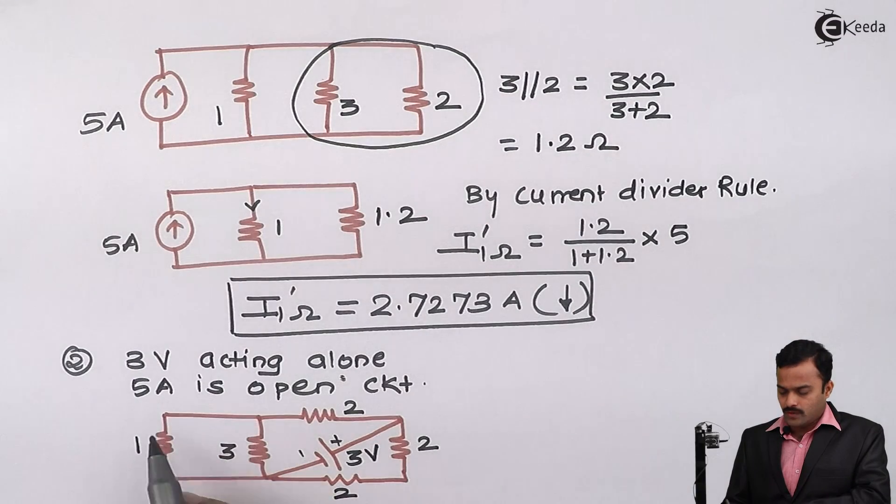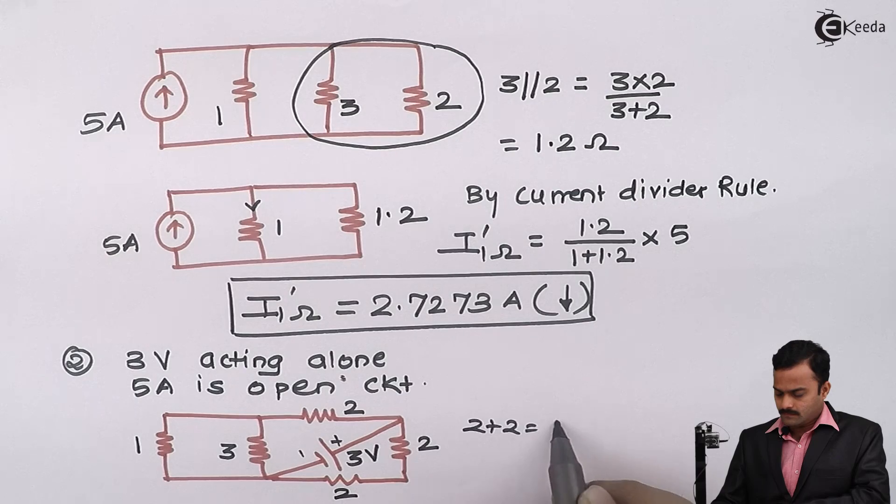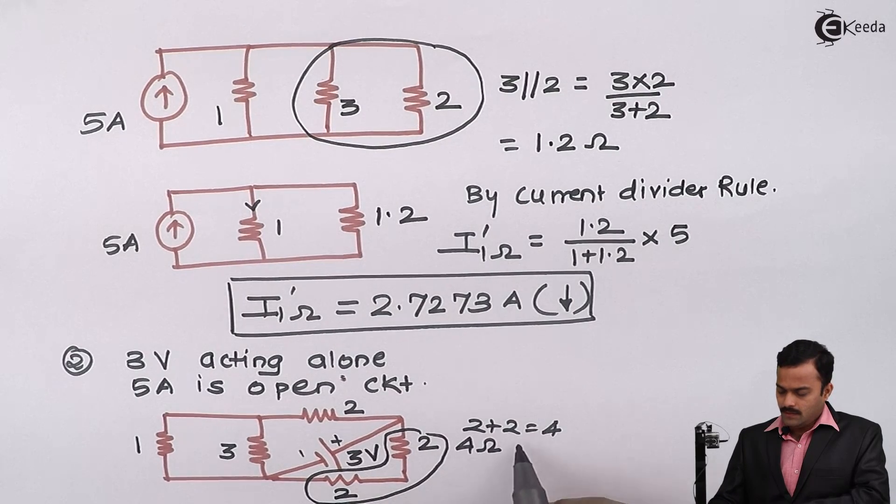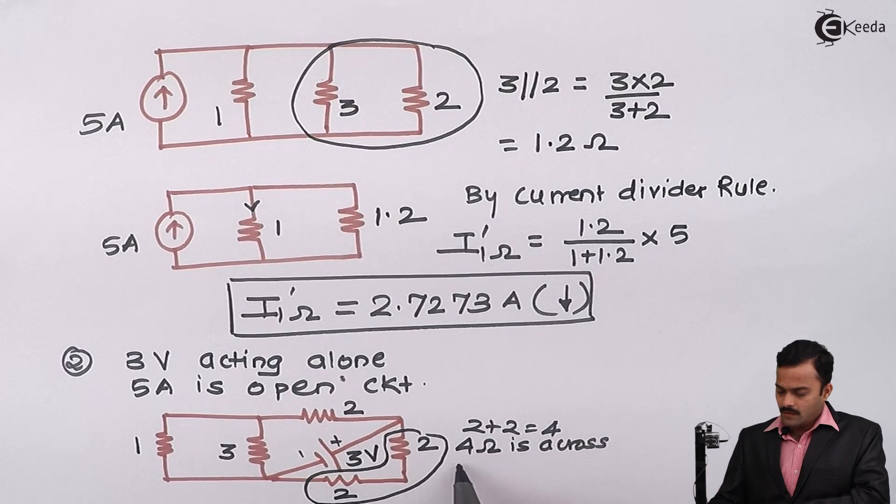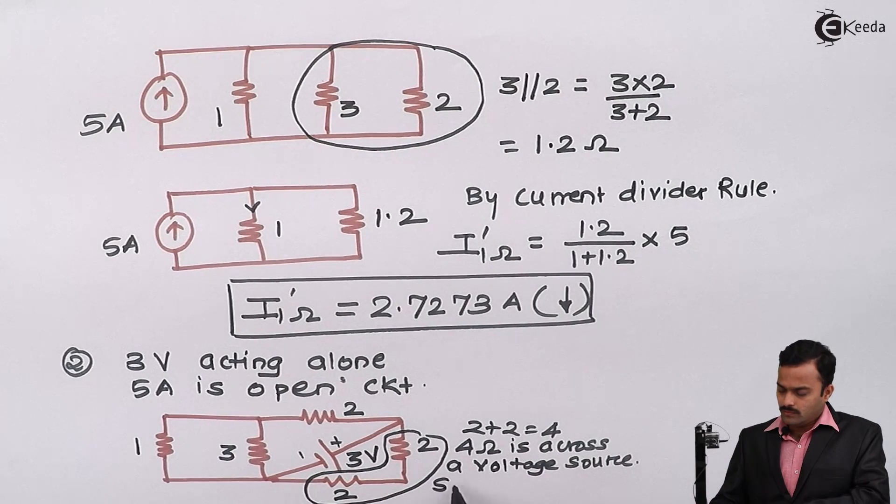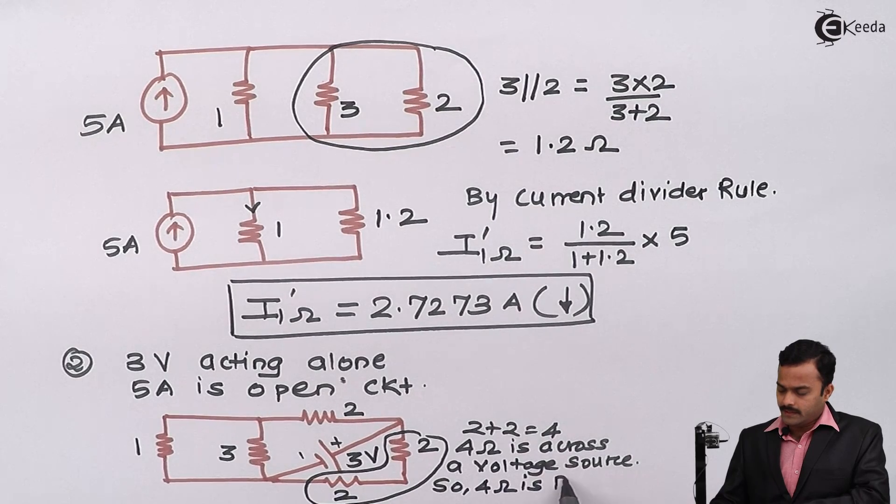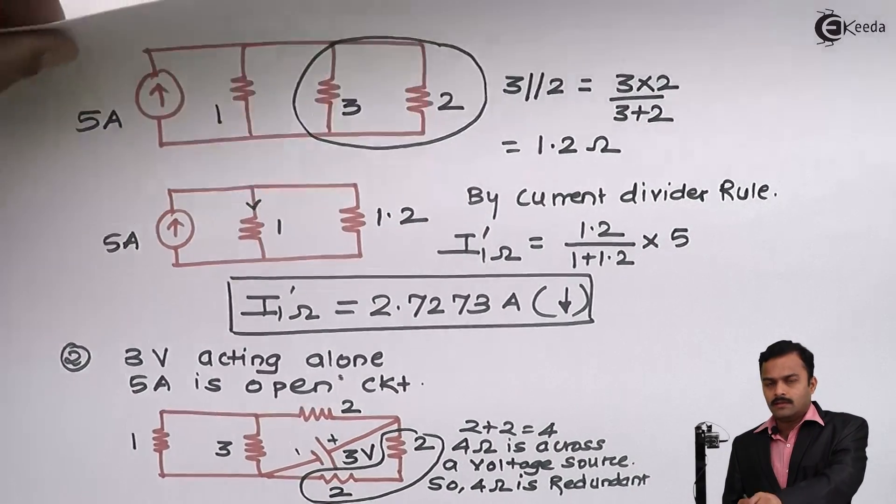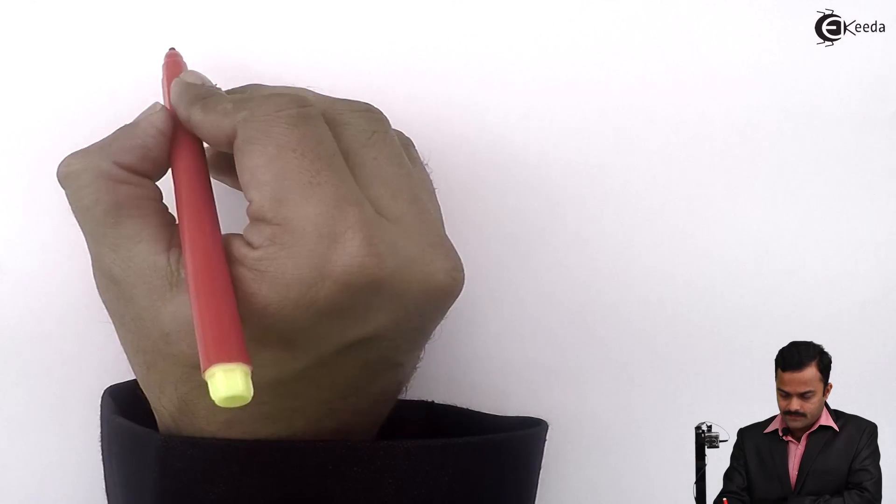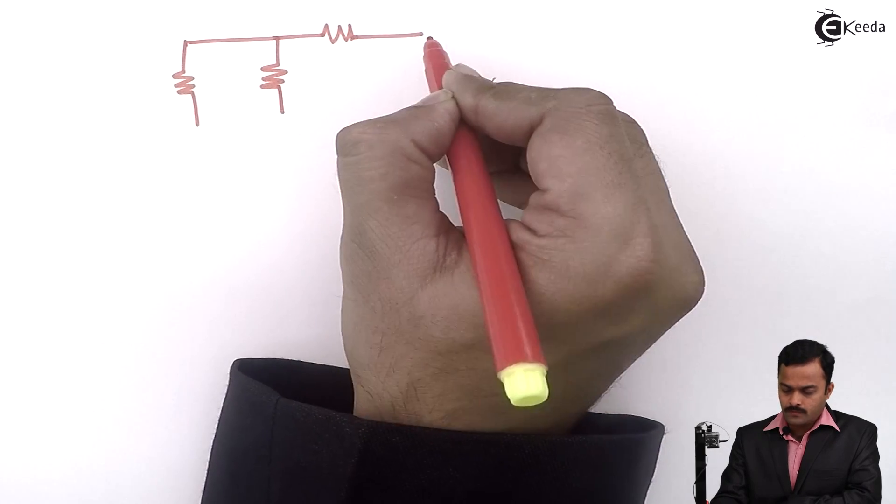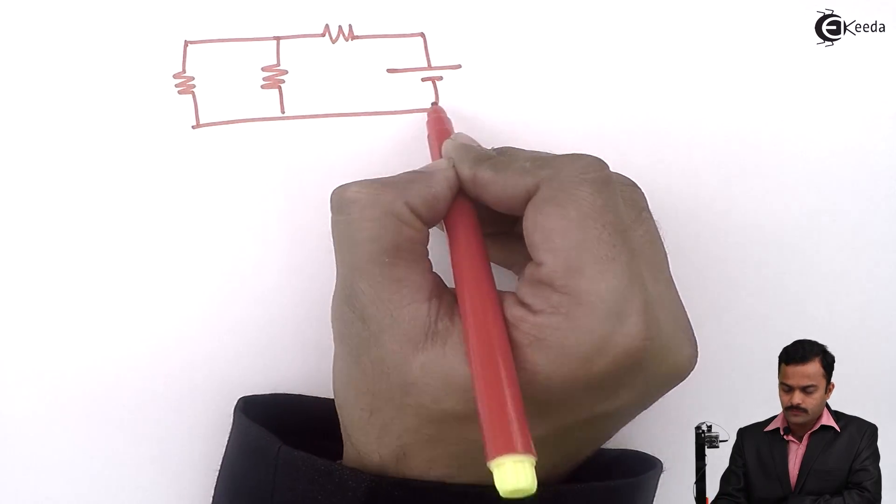Our job is to get current flowing through 1 ohm. Again, same thing applies. This 2 and 2 in series which will give me answer 4 ohm. But this 4 ohm is across a voltage source which is 3 volt. So 4 ohm is redundant meaning you can neglect this branch in a circuit. Let us redraw considering this fact. The circuit will be like this. 1 ohm, 3 ohm, which is 2 ohm resistance and only battery of 3 volt will be present.